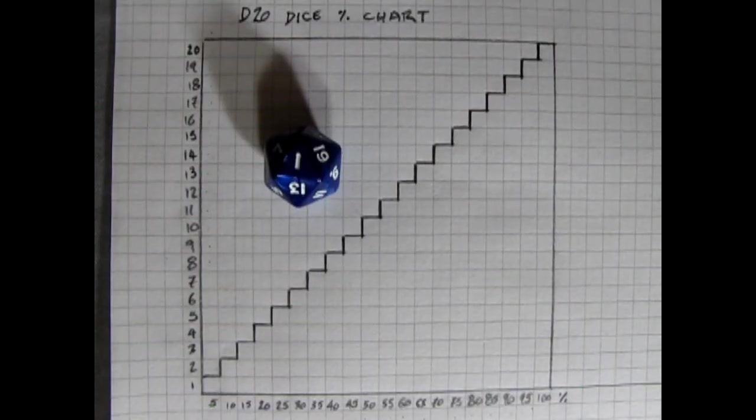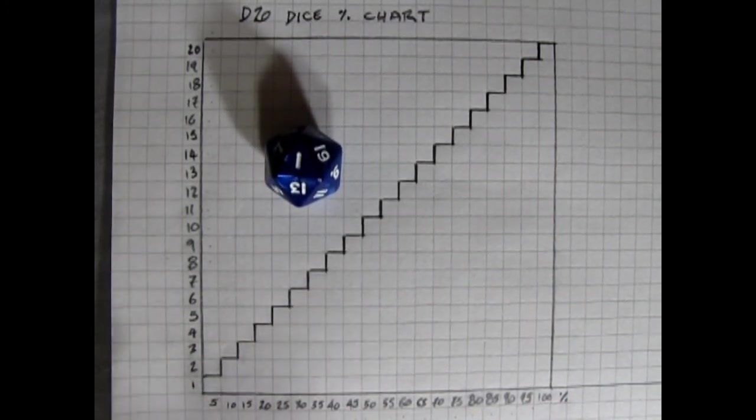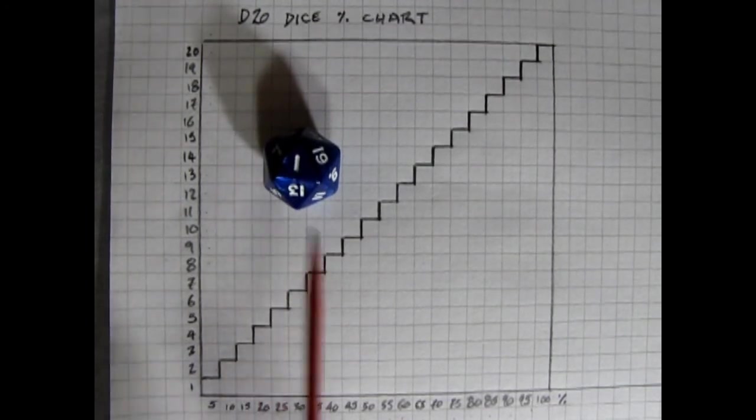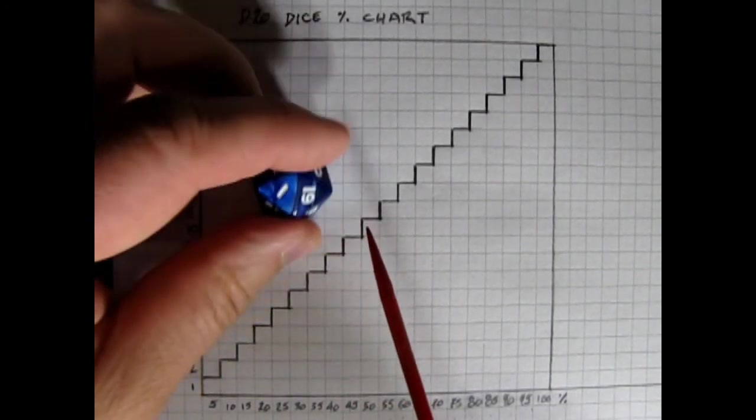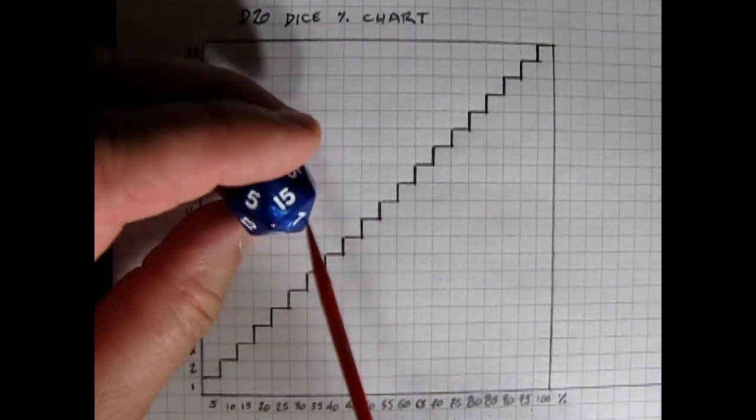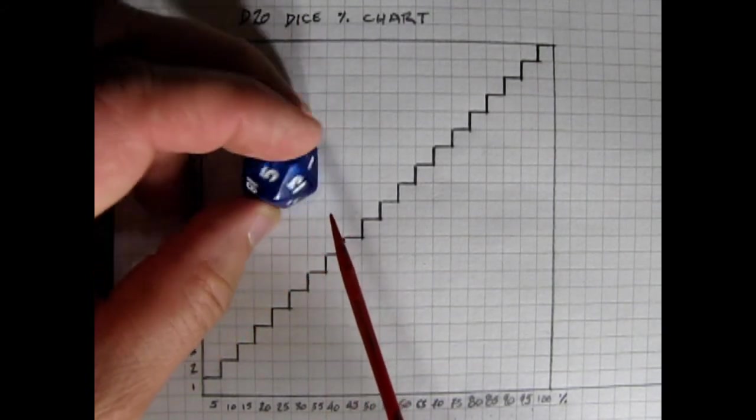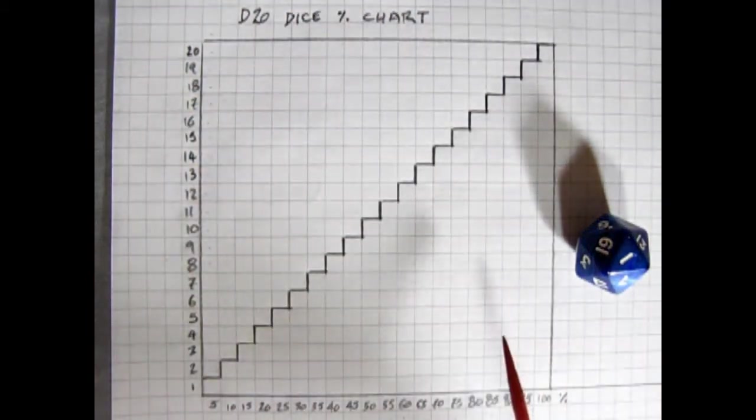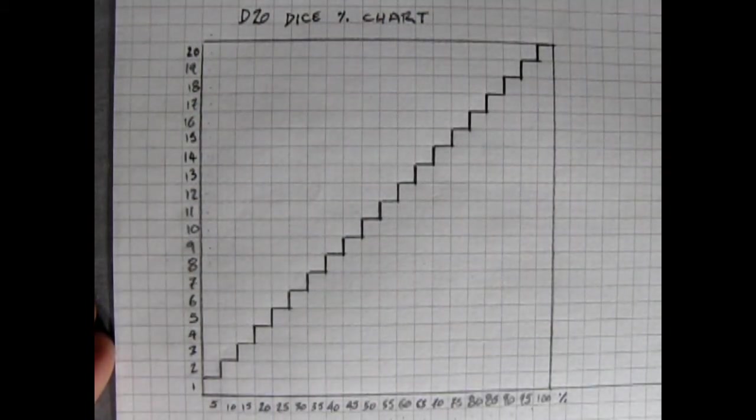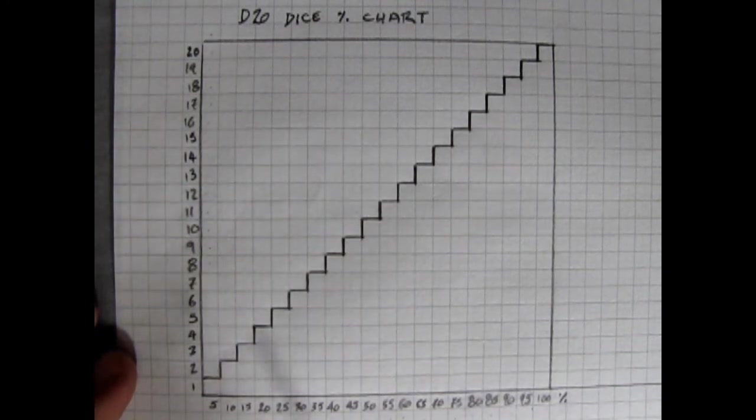Now, to help us along in our discussion, I made this chart here on graph paper, using a d20 with the percentages as it would be appearing on the faces of the d20. So for a 1, we get 5%, 2 would give us 10%, 3 is 15%, and on and on. So from here I've numbered from 1 to 20, and down here I've added in the percentages.